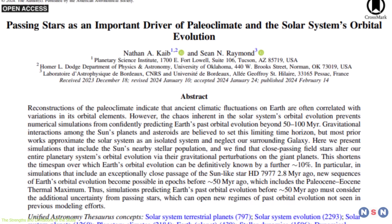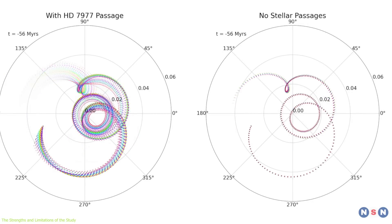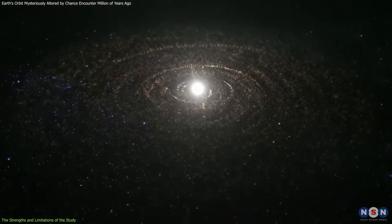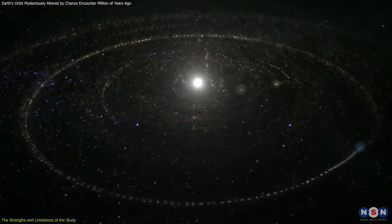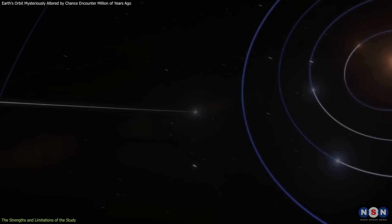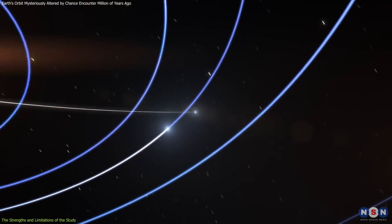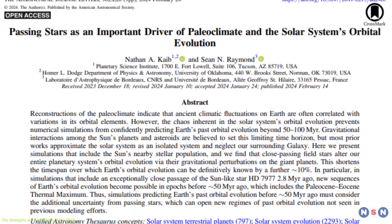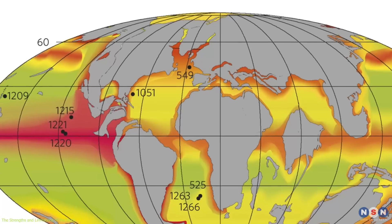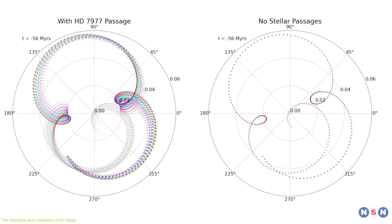One of the limitations of this study is its lack of direct observational evidence. It relies on computer simulations, which are based on mathematical models and assumptions. The simulations are not able to reproduce the exact history of the solar system, but rather to explore the range of possible outcomes that could have occurred under different scenarios. They are also dependent on the initial conditions and the properties of the passing stars, which are uncertain and hard to constrain. Therefore, the study cannot prove or disprove that a passing star actually happened, or that it was responsible for the PETM. It can only show that it was possible, and that it could have had an effect.